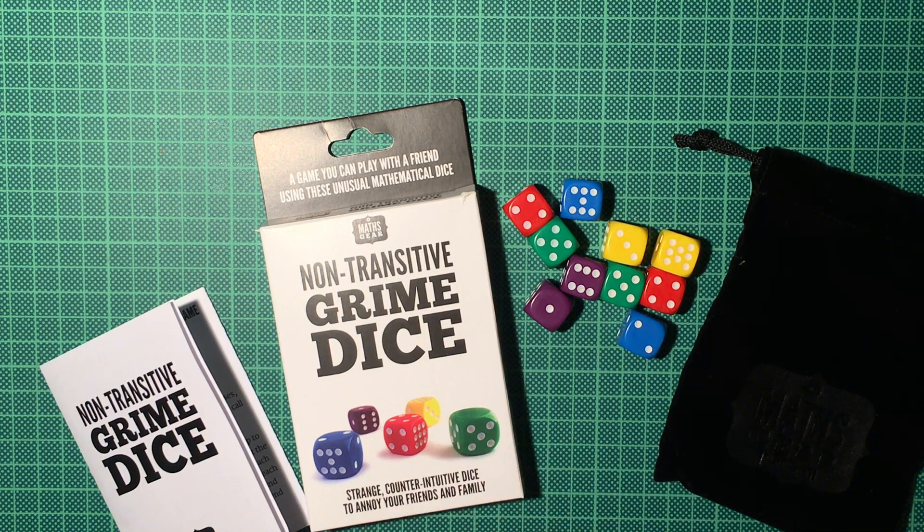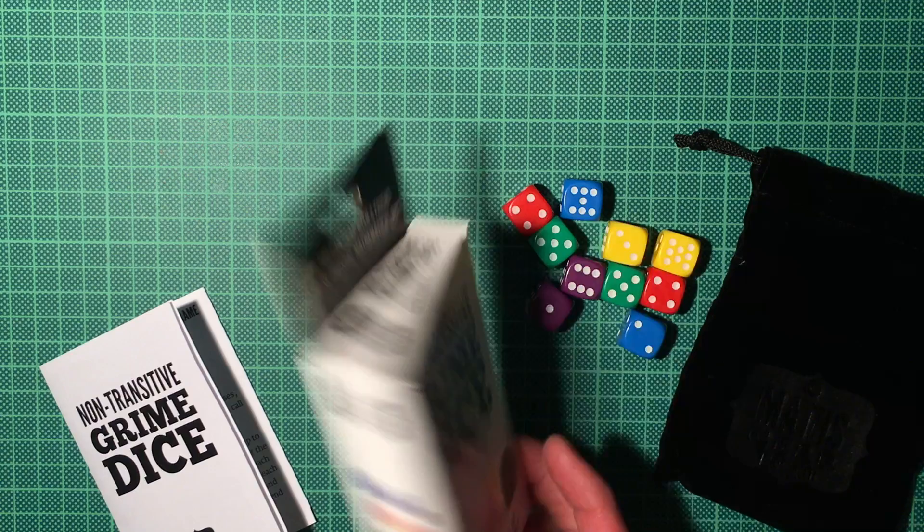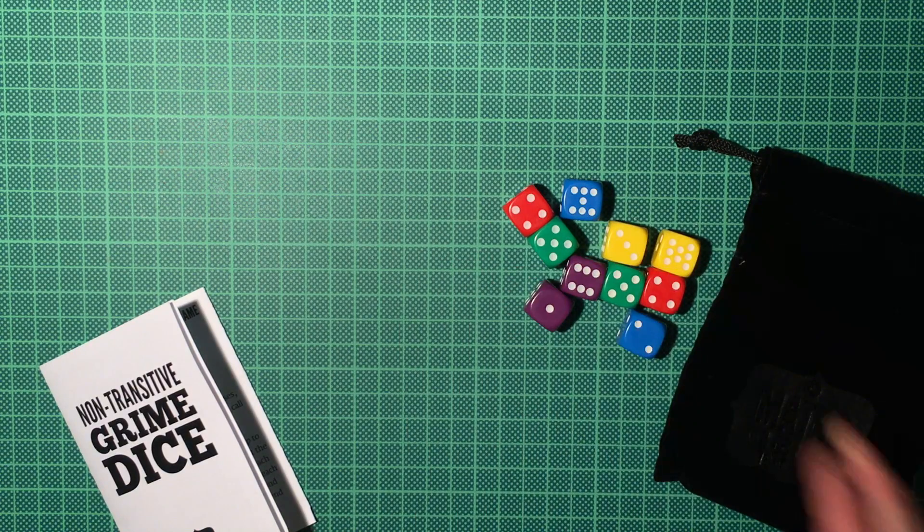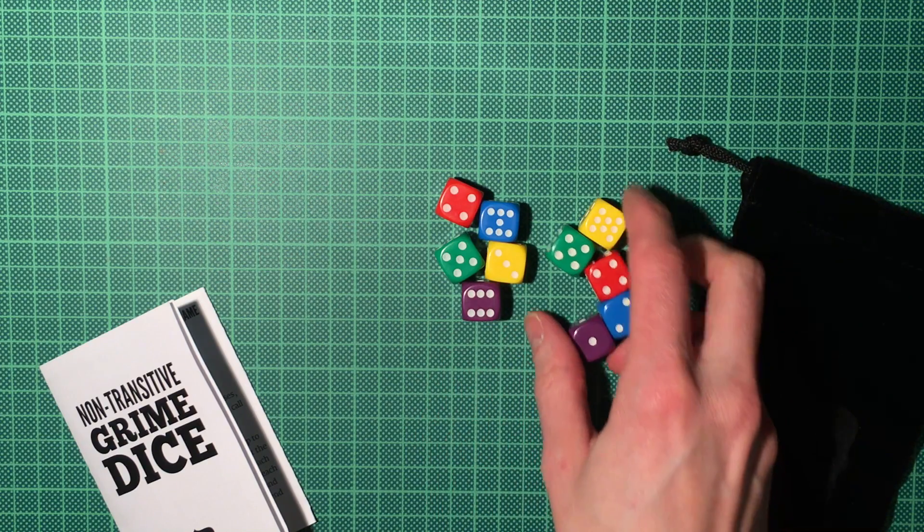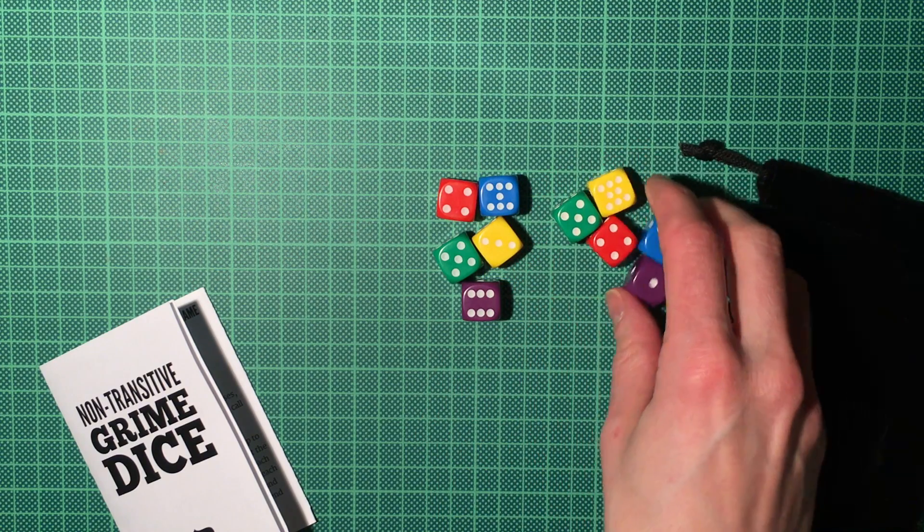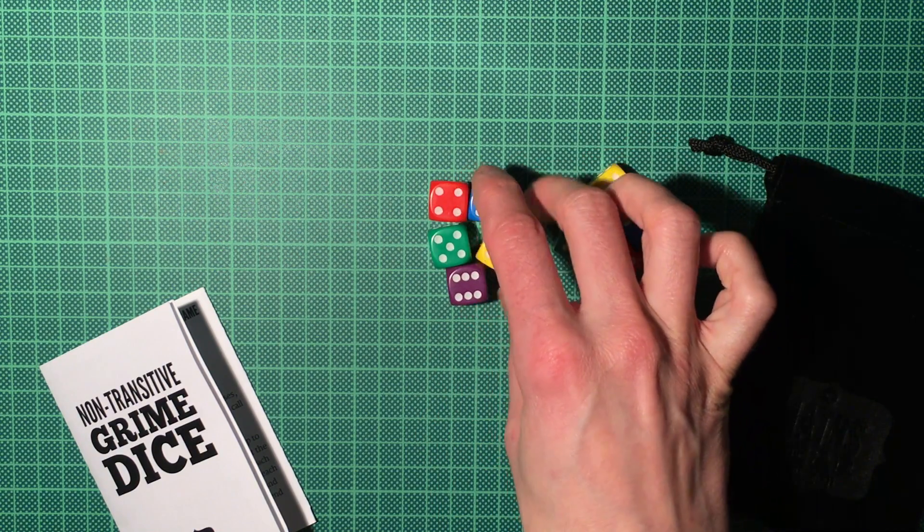But what are the non-transitive Dice? Well, they come in a nice box. You get five or ten depending on which set you take. Five are enough, but ten are needed for special games.